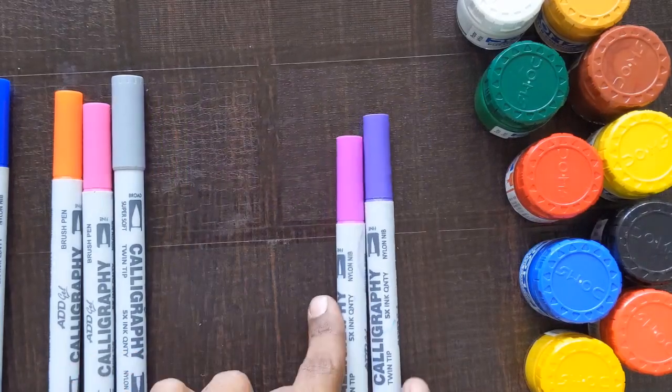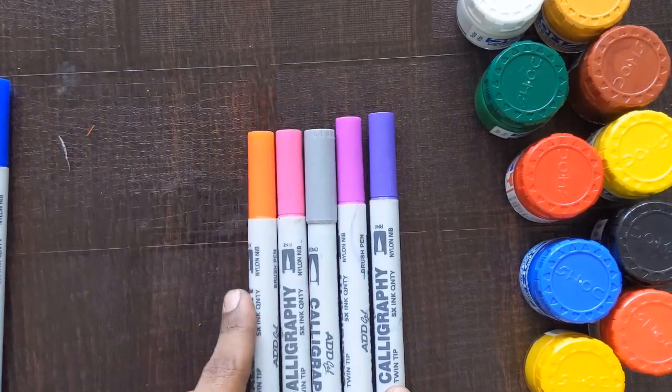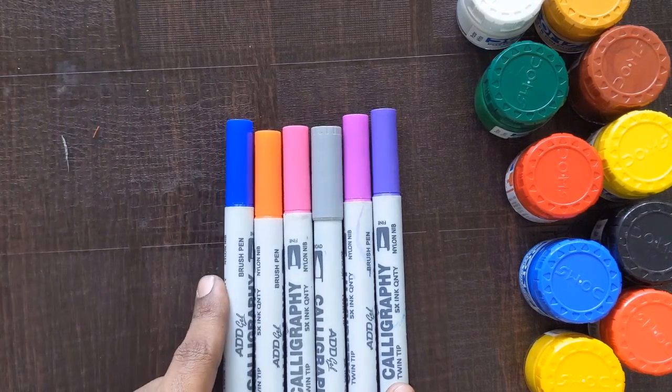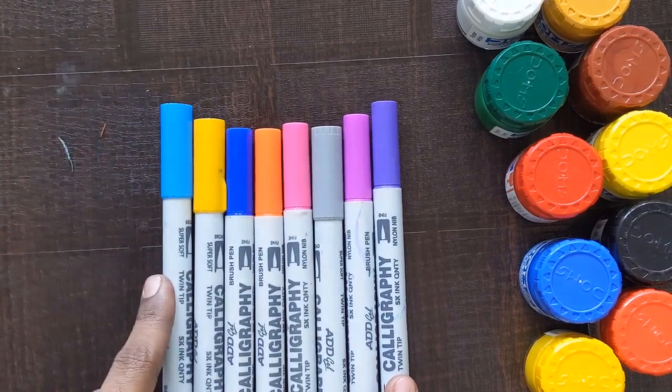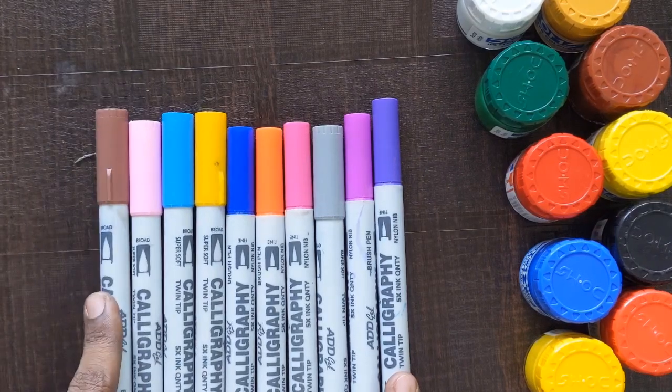Violet color, it's a purple color, gray color, pink color, orange color, dark blue color, yellow color, sky blue color, light pink color and brown color.